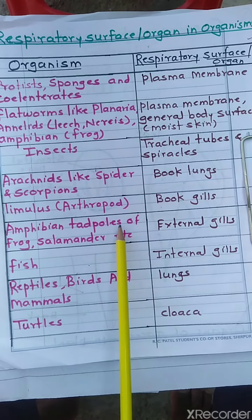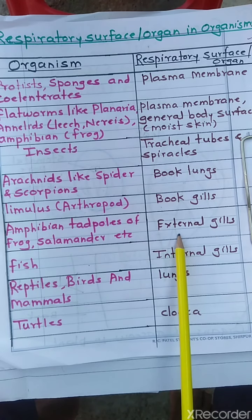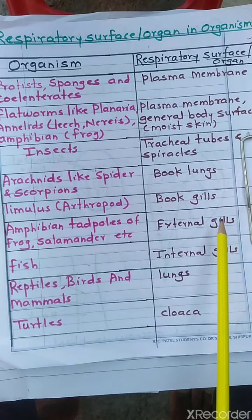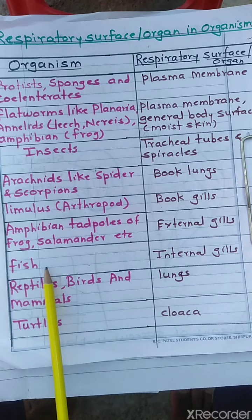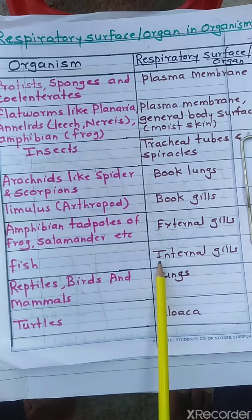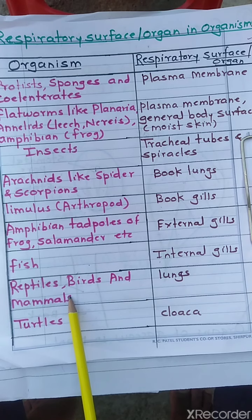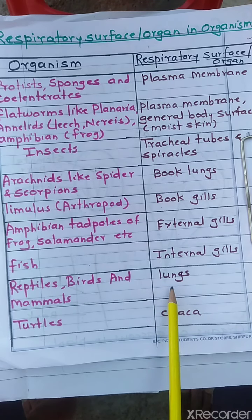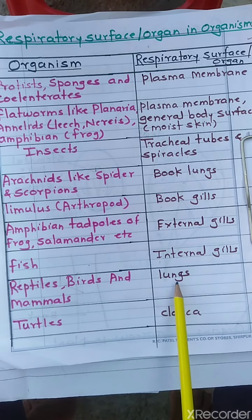Next, amphibians such as tadpole larvae, frogs, and salamanders — which are chordate animals — respire with the help of external gills. All fishes have a respiratory surface in the form of internal gills. Reptiles, birds, and mammals are all chordate animals that have a respiratory surface in the form of lungs — they all respire with the help of lungs.